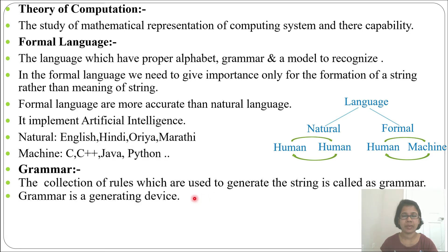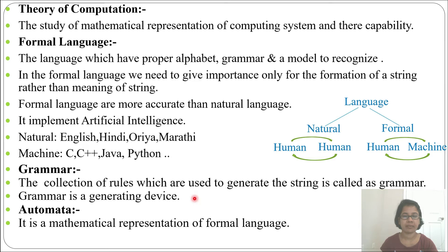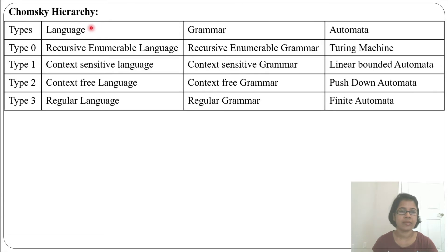Grammar is a set of rules that you follow to generate strings — it is a generating device. By using grammar we can generate some strings. Next is automata: it is a mathematical representation of formal language. Automata is a recognizing device — it is a machine which recognizes some strings. So automata is a recognizing device and grammar is a generating device. This brings us to the Chomsky hierarchy, which divides formal language into four types: Type 0 is recursively enumerable language, Type 1 is context-sensitive language, Type 2 is context-free language, and Type 3 is regular language.